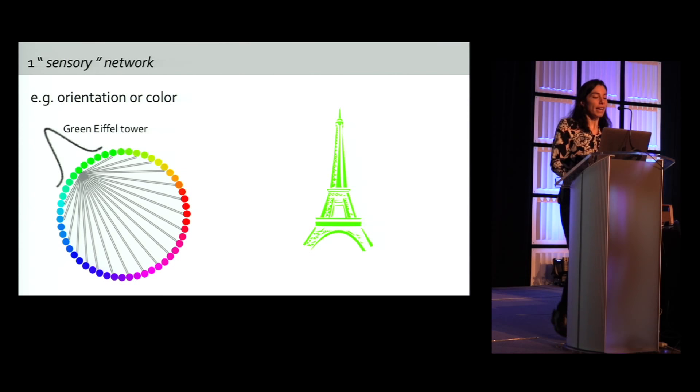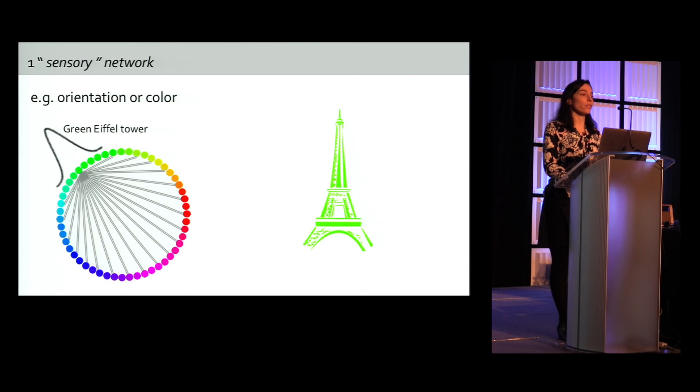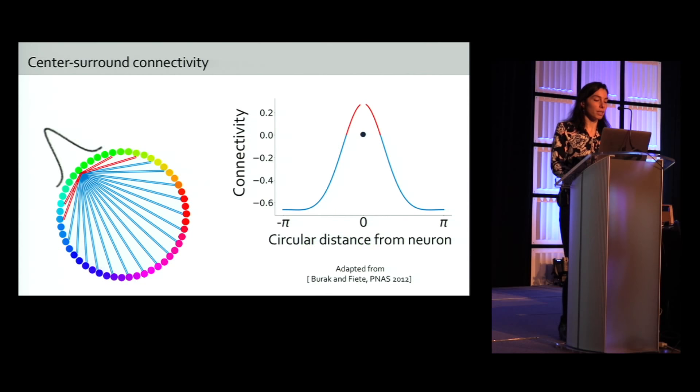We model each item on the screen by a simplified ring-like sensory recurrent network of inhomogeneous Poisson-spiking neurons with neurons around the ring corresponding to specific value of the feature, which is here color, for example. Inputs are Gaussian, and here, for example, the input is centered on the neuron selective to the green color to represent a green Eiffel Tower. Connections have a center-surround structure, represented here as connectivity as a function of the circular distance from each neuron, and going from minus pi to pi here is equivalent to traveling along the ring of the sensory network with respect to that neuron.